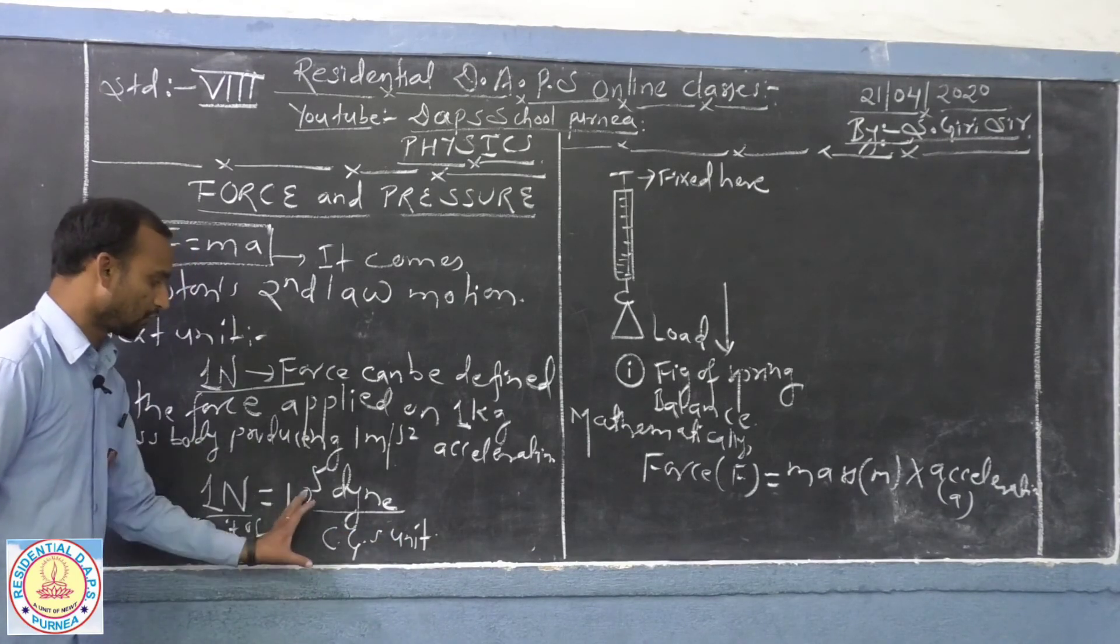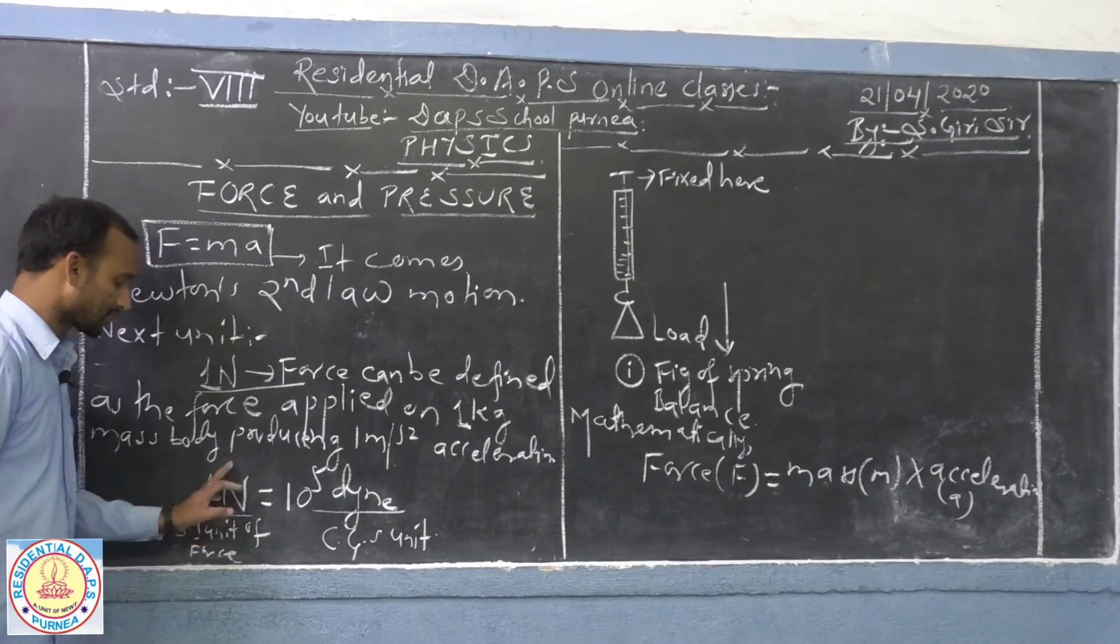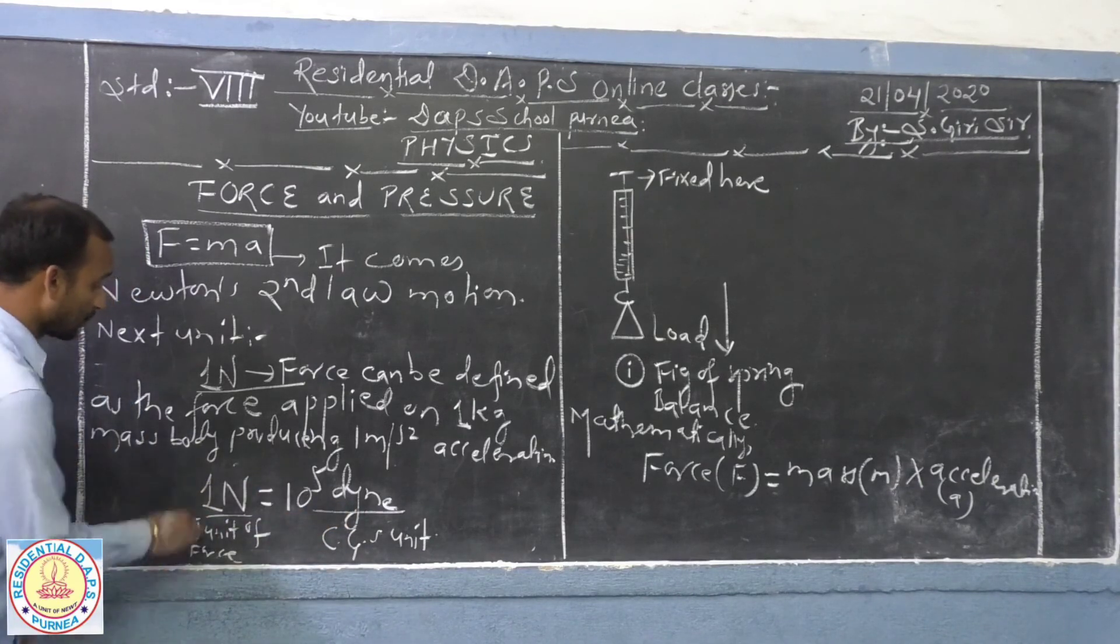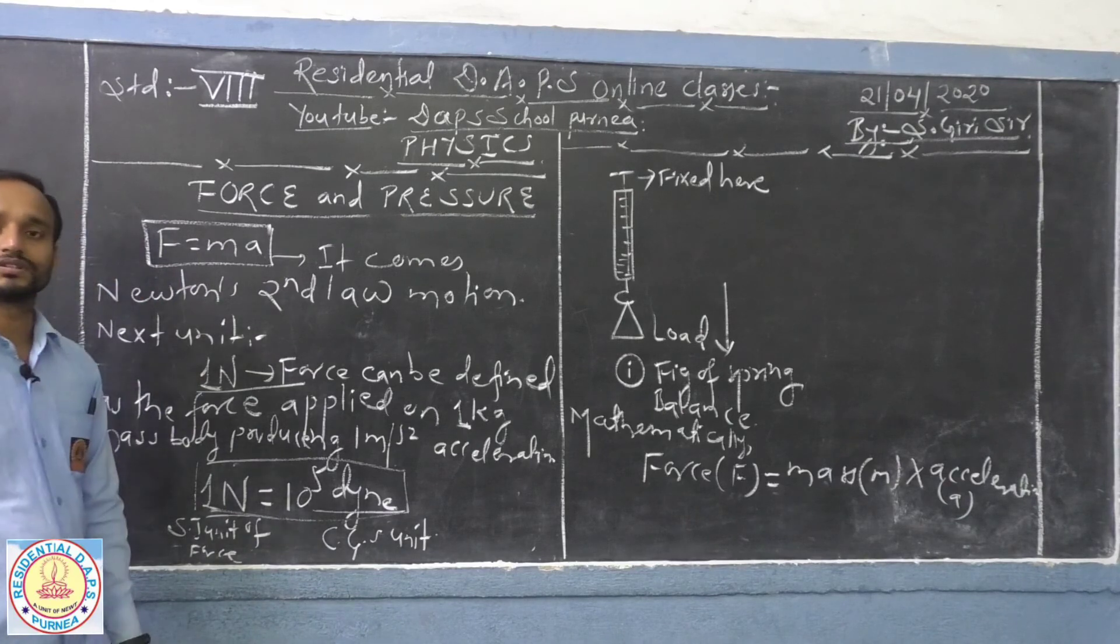This system is known as CGS system. So when you convert one Newton force SI unit, when you express it differently, one Newton force is equal to 10 to the power five dyne in CGS unit.